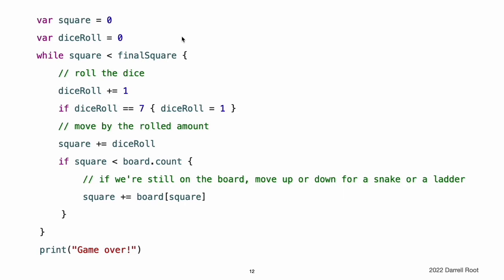This example uses a very simple approach to dice rolling. Instead of generating a random number, it starts with a dice roll value of zero. Each time through the while loop, dice roll is incremented by one and checked to see whether it has become too large. Whenever this return value equals seven, the dice roll is reset to a value of one, producing a sequence of one, two, three, four, five, six, one, two, and so on. After rolling the die, the player moves forward by dice roll squares. The code checks that square is less than the board array's count property; if square is valid, the value stored in board[square] is added to the current square value to move the player up or down any ladders or snakes.